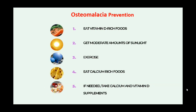Prevention of osteomalacia includes: eating vitamin D-rich foods in the diet, getting a moderate amount of sunlight, doing regular exercises, eating calcium-rich foods, and taking calcium and vitamin D supplementations on a regular basis if needed.